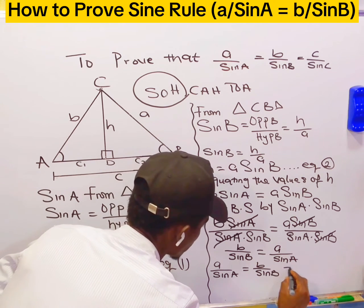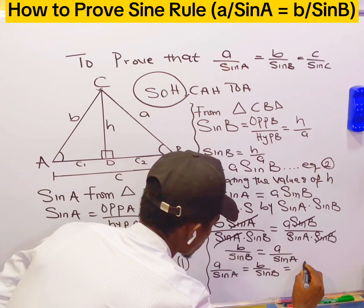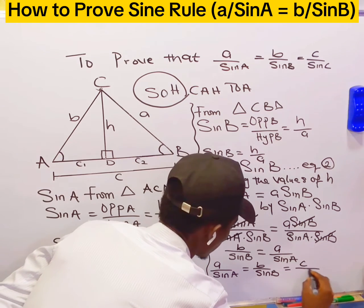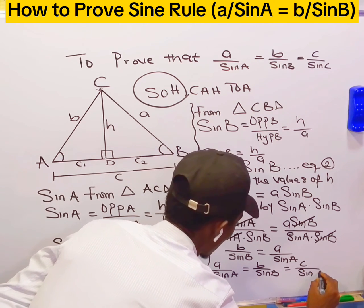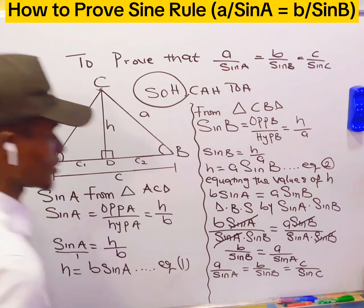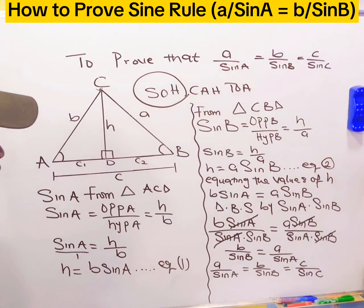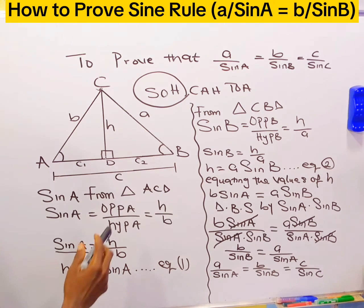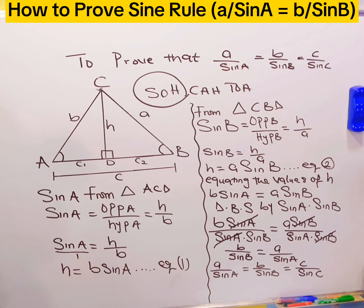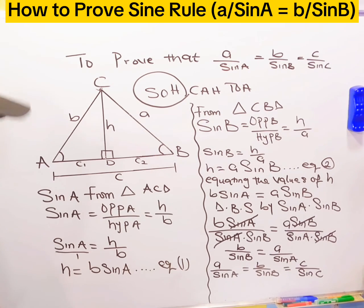And we can also say this is equal to c over sin C. So this is how to prove the sine rule: a over sin A equals b over sin B equals c over sin C.